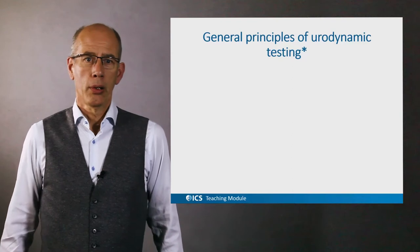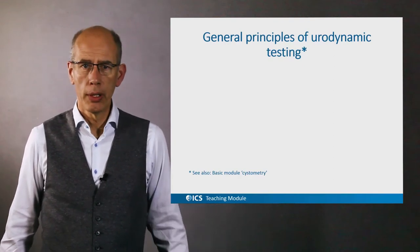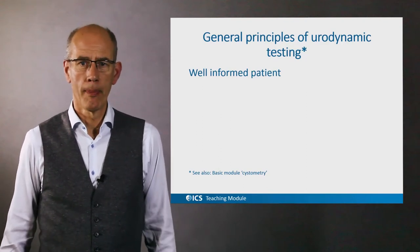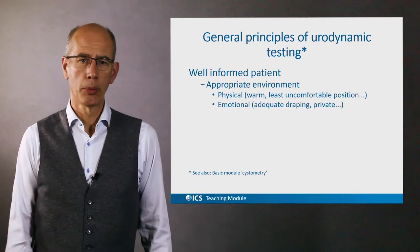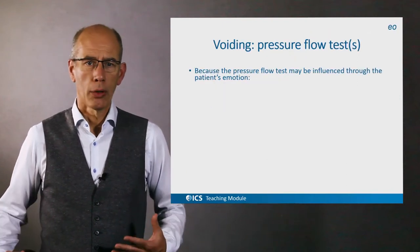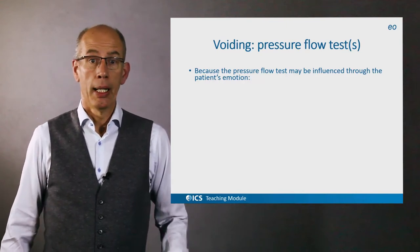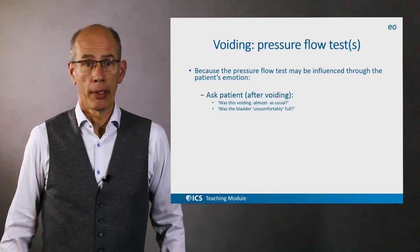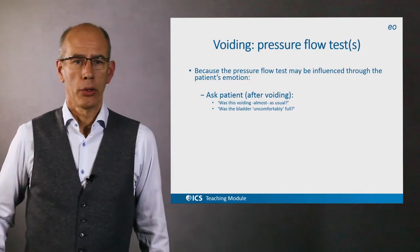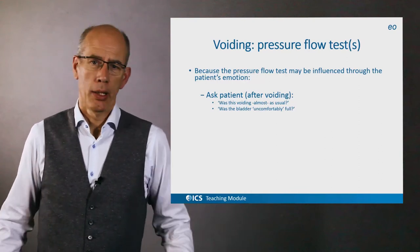The general principles of urodynamic tests, also accounting for cystometry, are that the patient should be well informed of what is going to happen. There should be an appropriate environment and the procedure should be antiseptic. Voiding pressure flow tests may be influenced by the patient's emotions, which should play a role in good urodynamic practice. After the test, after the patient has voided, it should be asked: was this almost as usual, and was the bladder as full as usual?